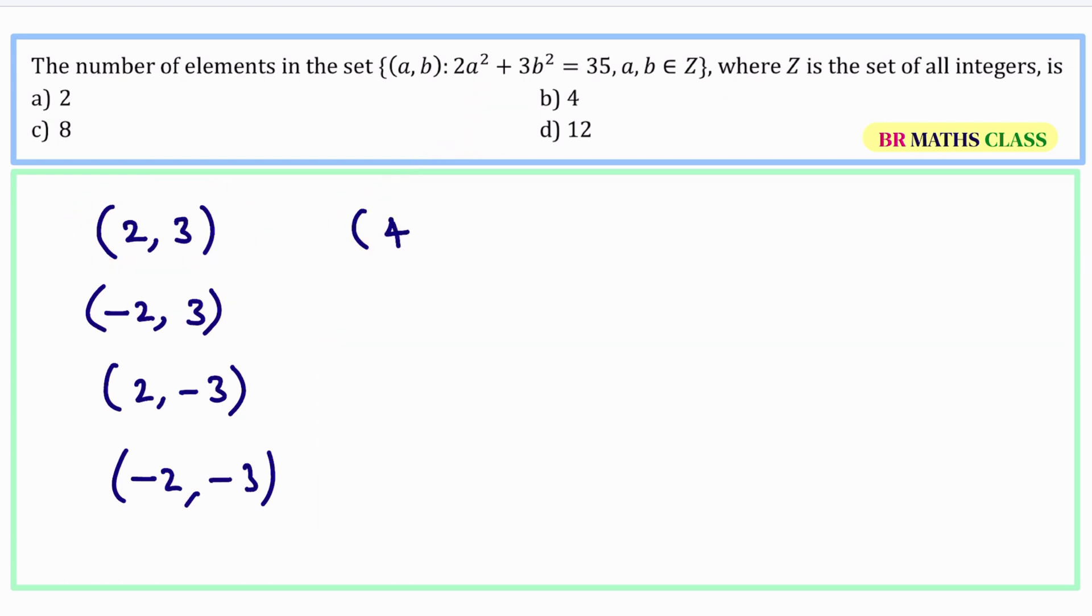And one more order pair satisfies this. That is 4 comma 1. You substitute this 4 comma 1 in this. What you'll get? 2 into 4 squared is 16. Plus 3 into 1 squared is 1. 16 twos are 32. 32 plus 3 is 35. So, order pair 4 comma 1. 4, 1 both are integers satisfying this.